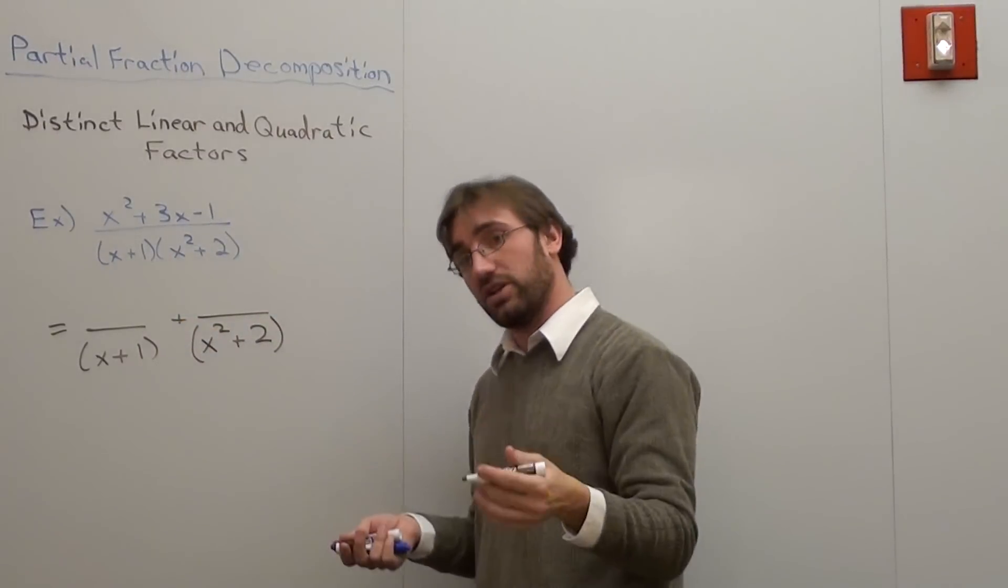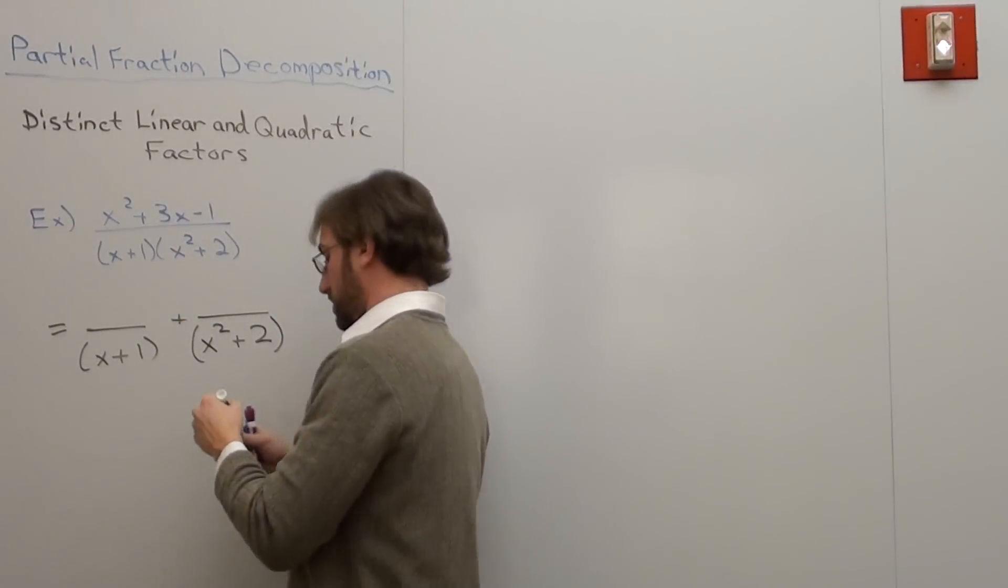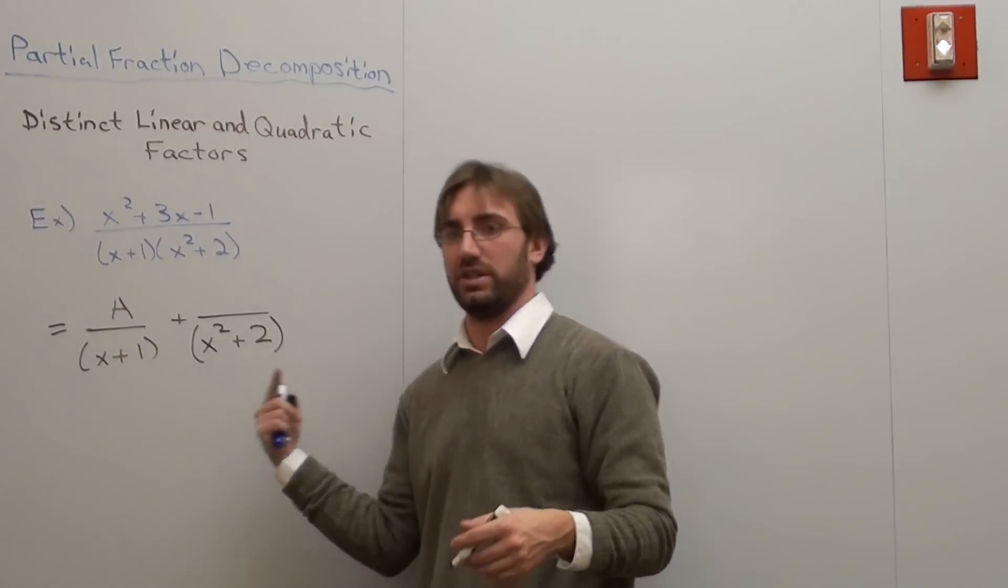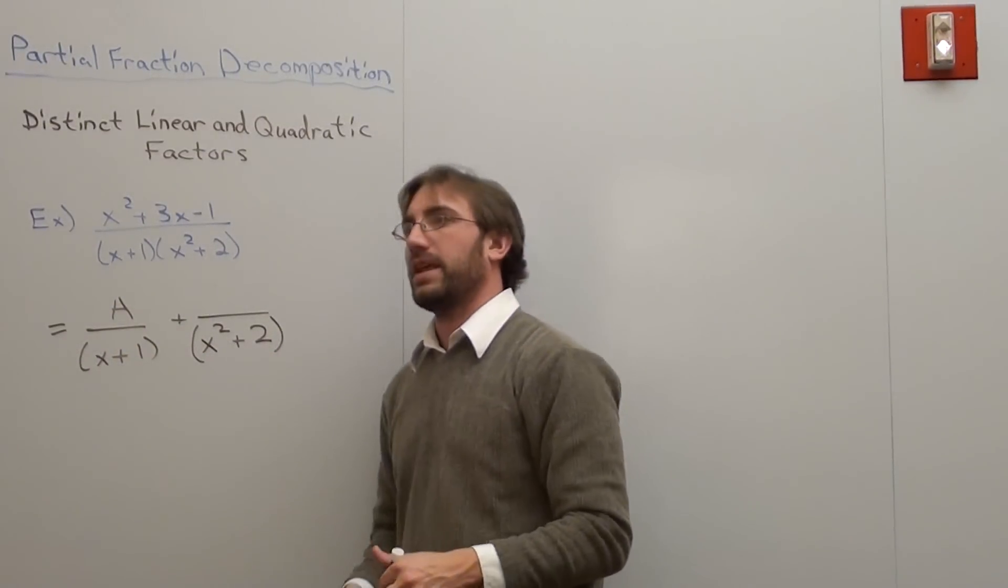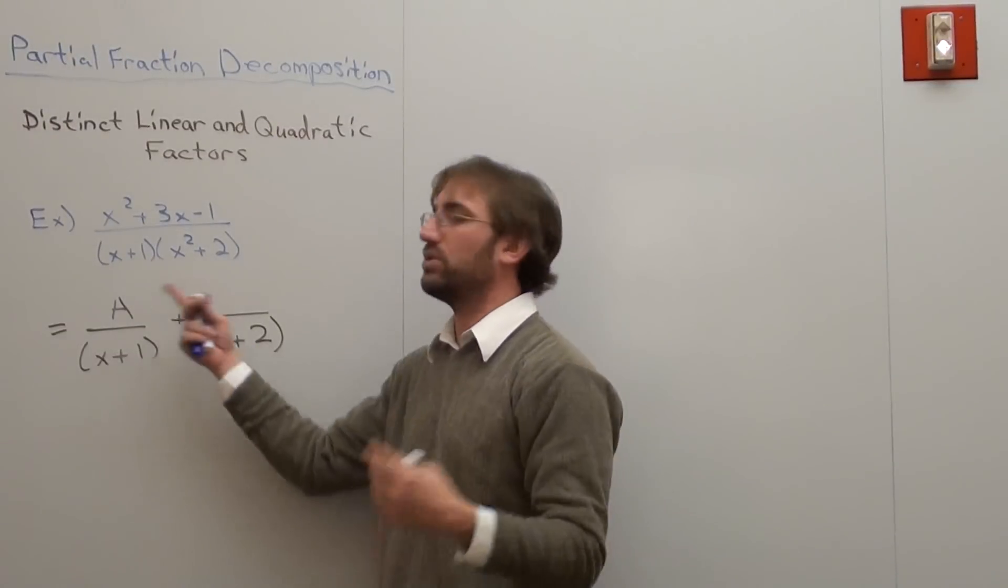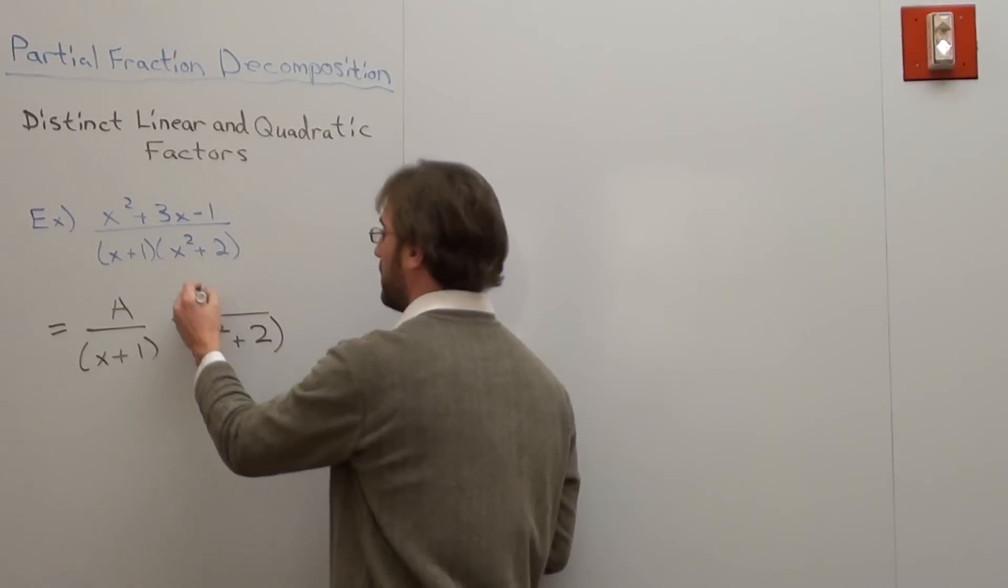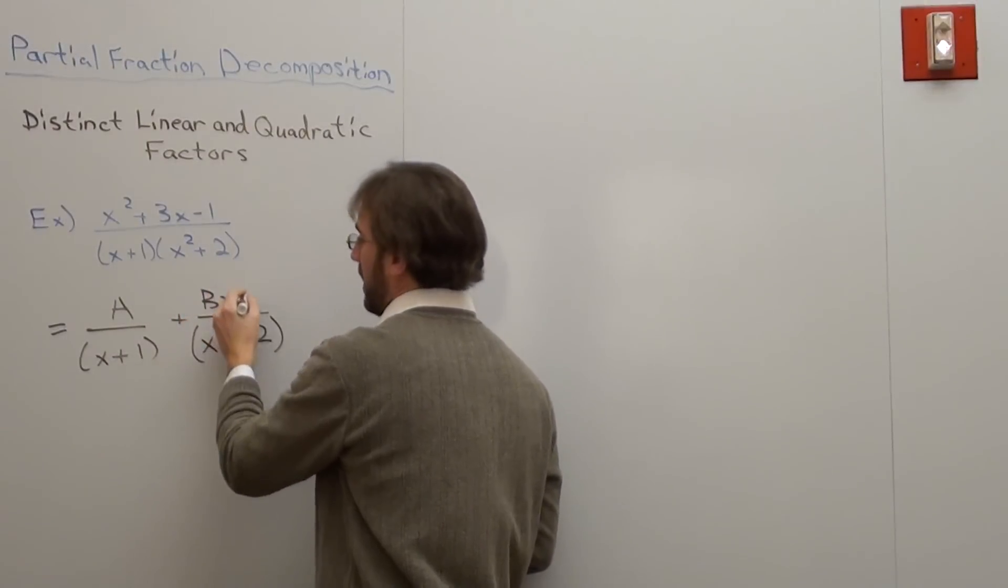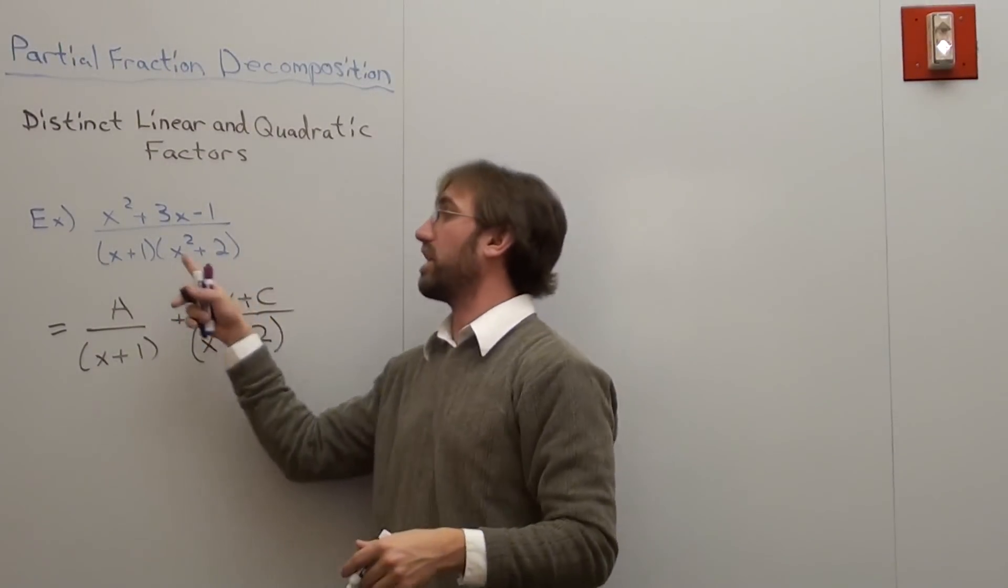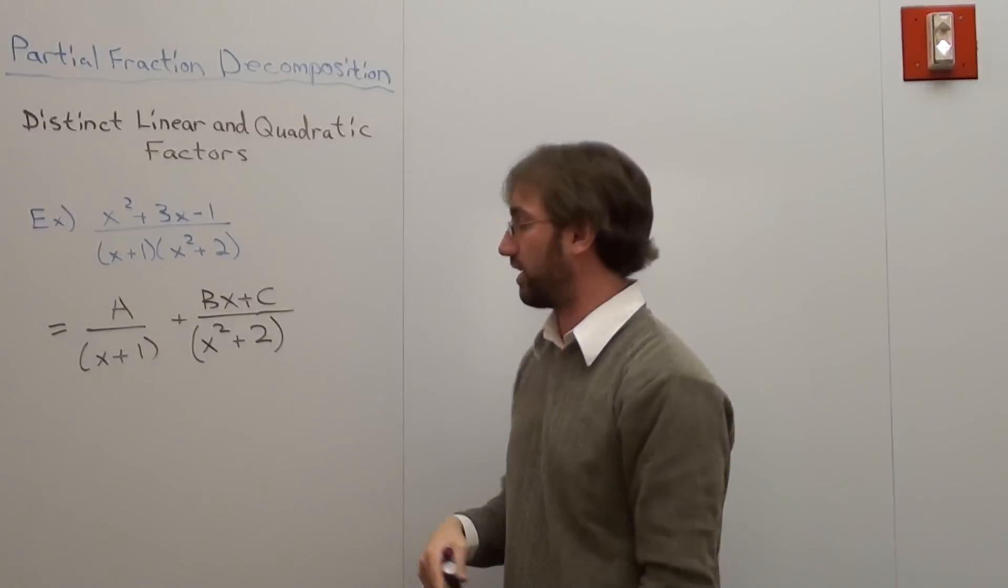x squared plus 2. Now, what's really interesting is for a linear factor, your numerator is just a variable. If you repeat it, be a, b, c, whatever. For this one, it's a variable times x and then plus another variable. I've already used a, so let's use bx, and then plus another variable altogether. So it's different. A distinct quadratic factor is different than a distinct linear factor.